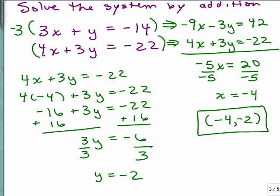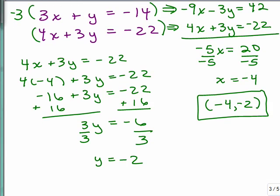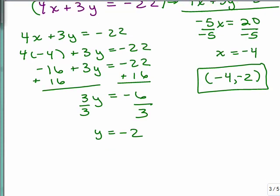The other two things that might happen is when you add, you'll either get a true equation or a false equation. Anytime you get a true equation like 5 equals 5, that's the dependent solution. They were the same line and infinitely many solutions would be your answer. Anytime you get a false equation like 5 equals 8, it would be no solution.